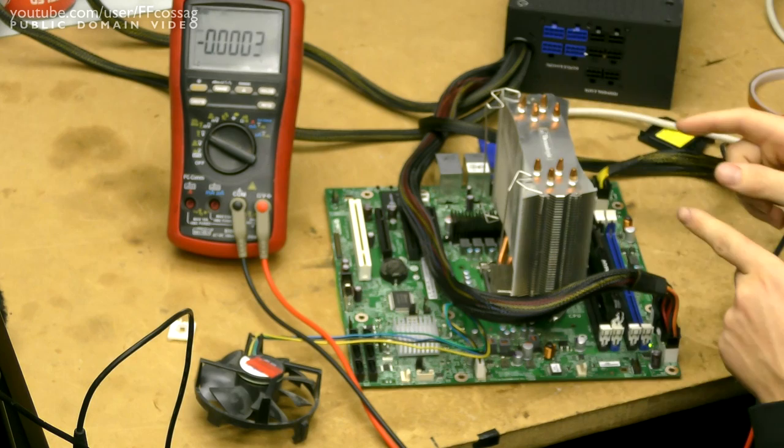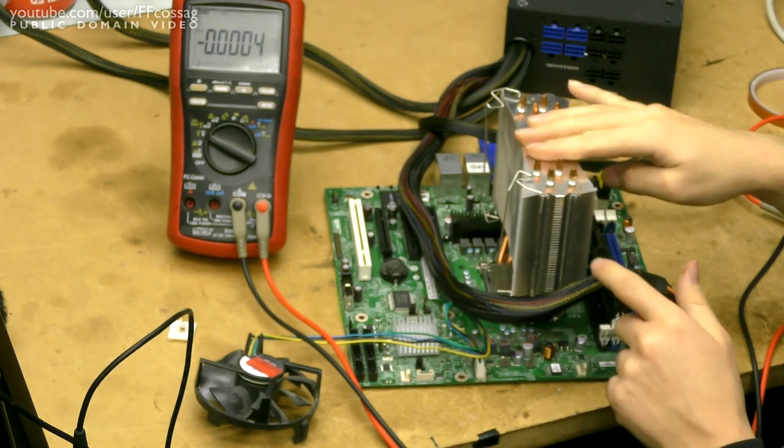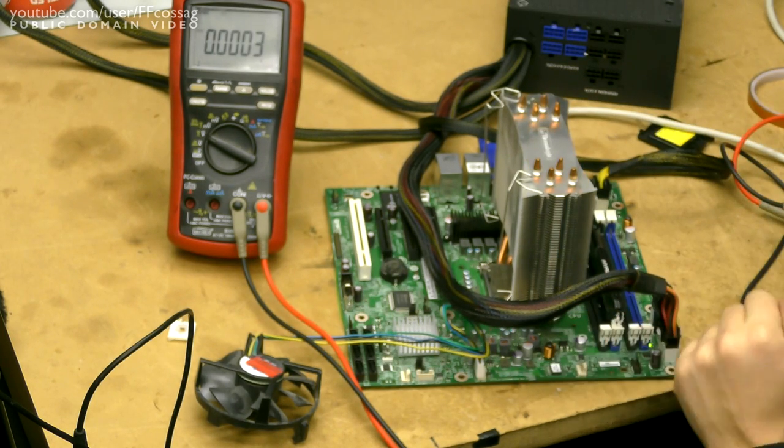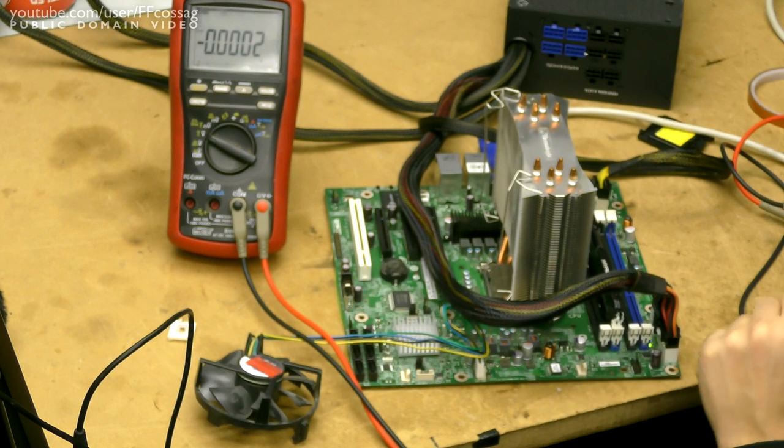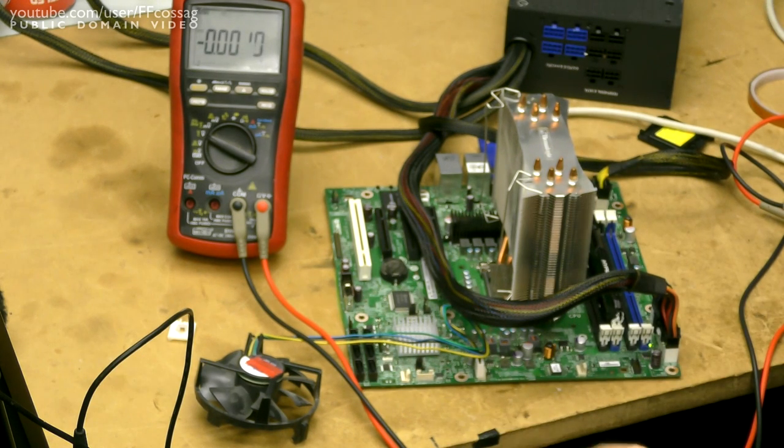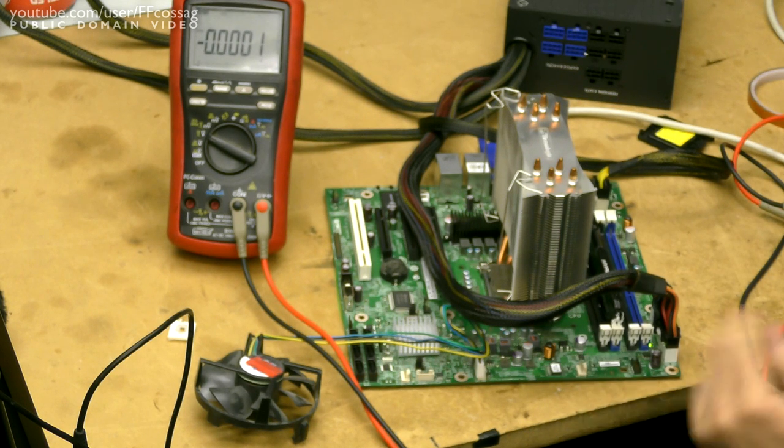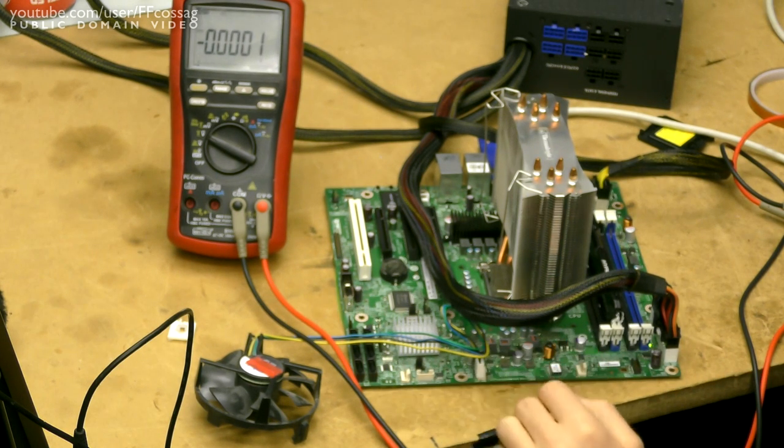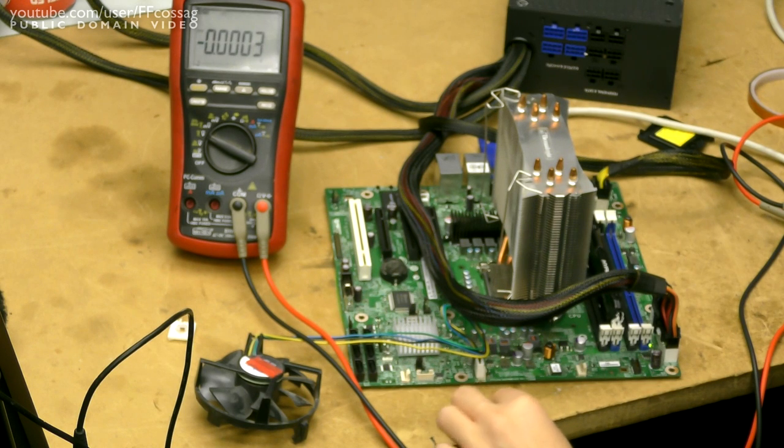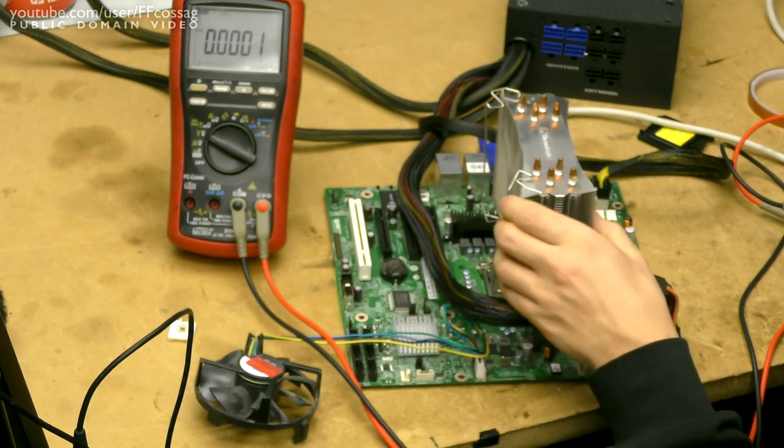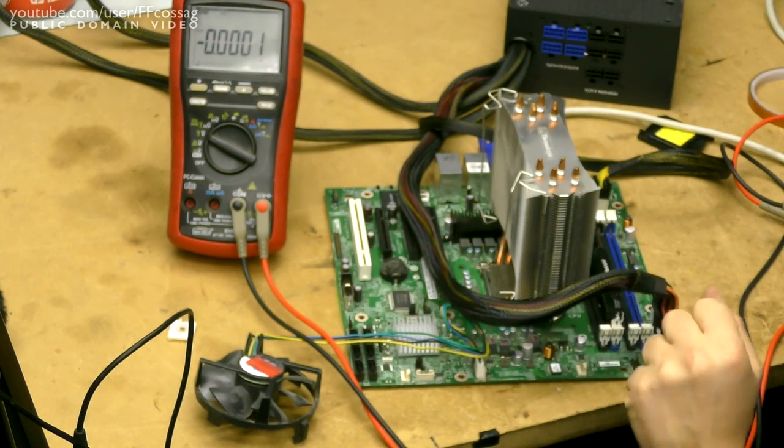But yeah, at least we now have a confirmed test that an i5, at least 2500K, will not run in this motherboard, because if that were the case, we'd be getting some picture. And it would turn off at one tick of the power button, we wouldn't have to hold it in for four seconds. So alas, we are still forced to purchase a Xeon processor for this thing, but at least now we can turn it off.